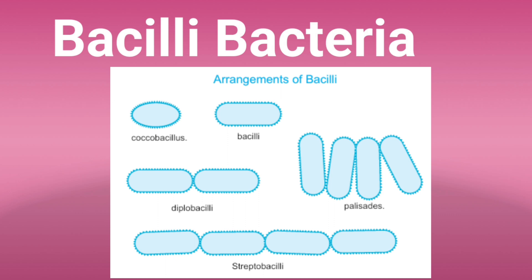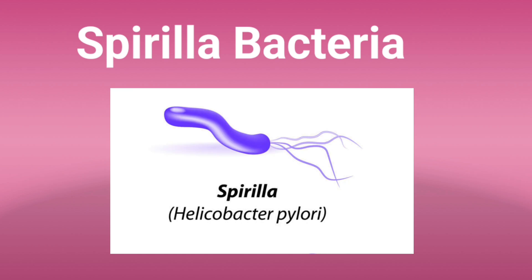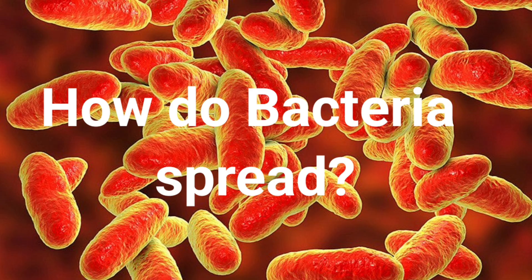large-shaped bacteria. Cocci bacteria — they are round-shaped bacteria, like a ball. Spiral bacteria — spiral bacteria are S-shaped, like a spring. How do bacteria spread? Did you know that there are bacteria all over our body?